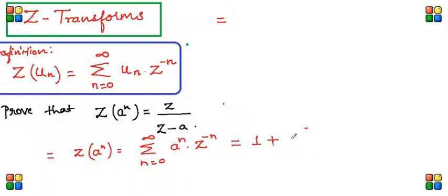So it is a/z. Similarly, when n equals 2, this becomes a squared and z squared, so it is (a/z) whole square. And so on, like this it becomes (a/z) whole cube plus dot dot dot to infinity.